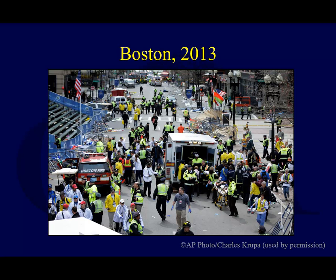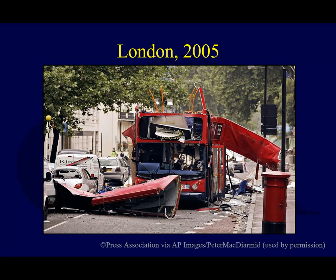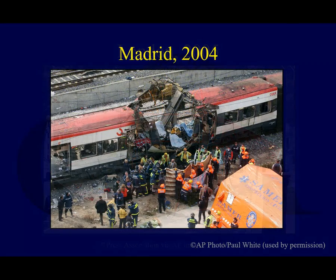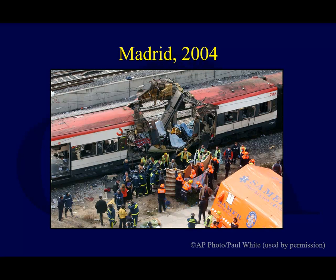At the Boston Marathon finish line in 2013, three were killed and over 200 injured from bomb devices. In London in 2005, four bombs — three aboard London Underground trains and one on a double-decker bus — killed 52 civilians and four terrorists, injuring over 700. These were homemade organic peroxide-based devices. In Madrid in 2004, ten IEDs exploded near-simultaneously aboard four trains during morning rush hour, killing 191 and wounding over 1,800.